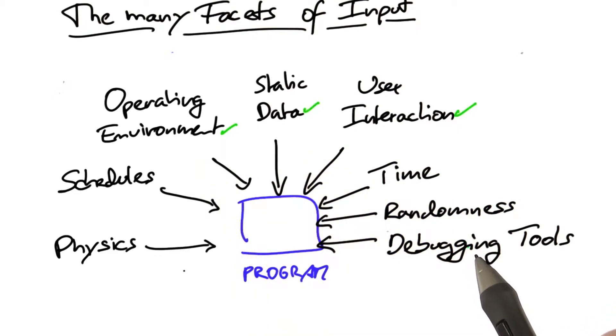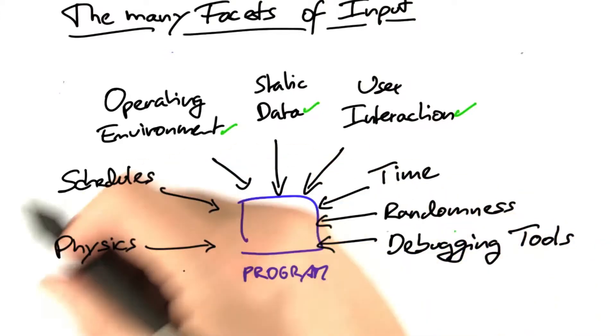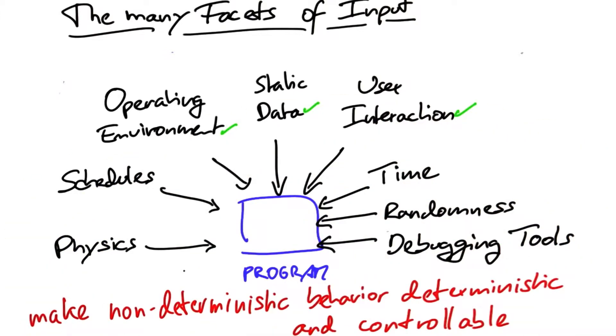Let me now briefly discuss some additional items that are of particular importance during debugging. The key concept for all of these is to make non-deterministic behavior deterministic and controllable at the same time.